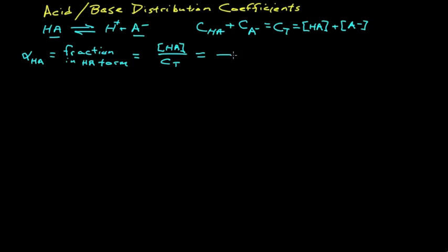Well, that total is just the sum of HA and the anion form. So this is the fraction we wish to calculate. Since all these species are in the same solution, then the volumes are the same.